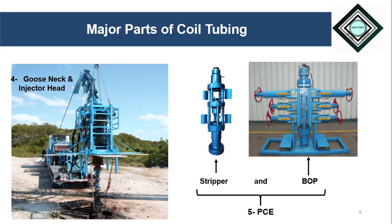The fifth part is pressure control equipment. As indicated by the name, pressure control equipment is used to control well pressure. It comprises two separate pieces of equipment: the first is the stripper, which provides a dynamic seal while the CT pipe is moving in or out of the well; the second is the BOP, which is used to control the well in an emergency situation.